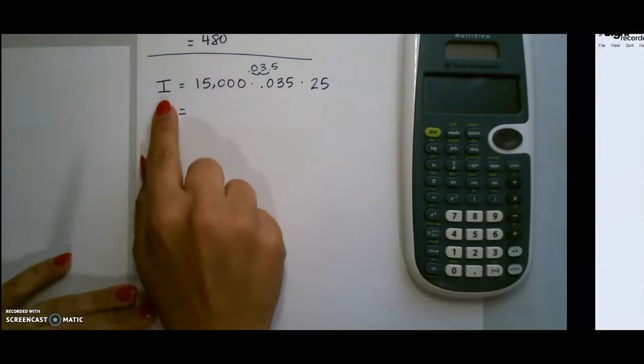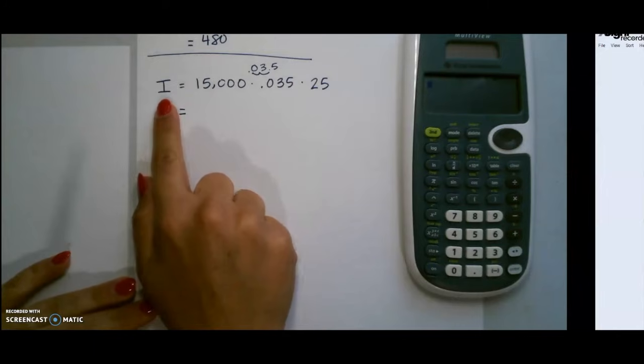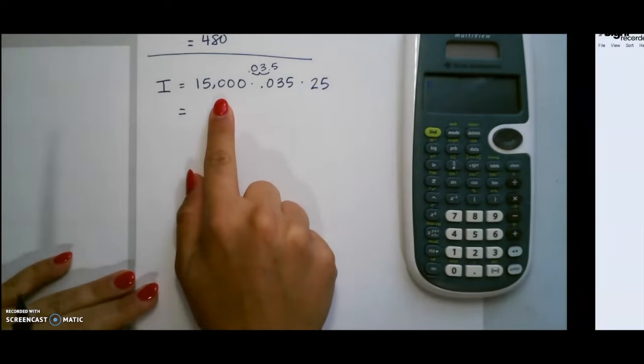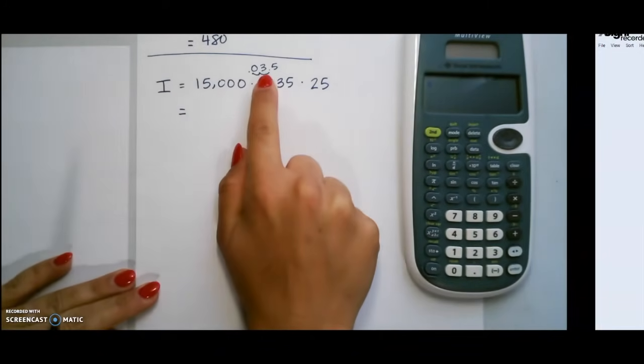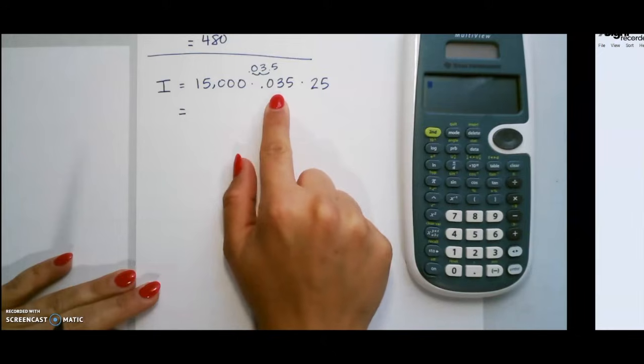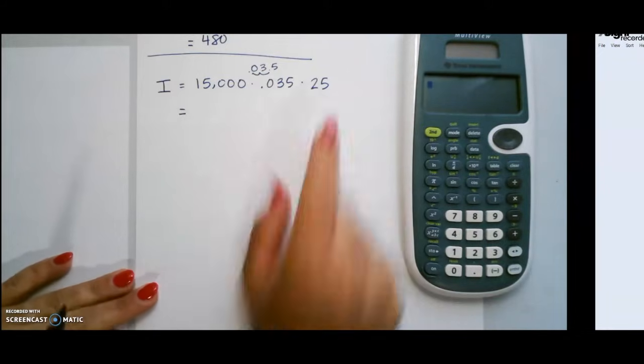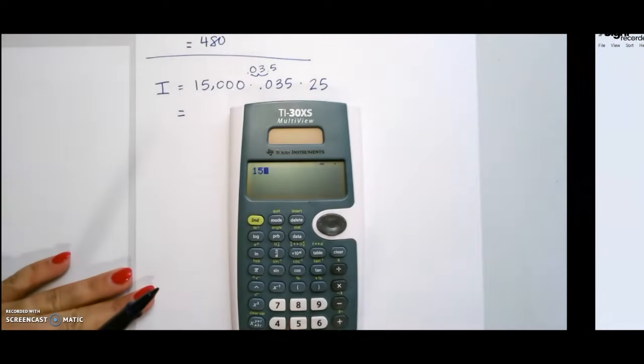First, we're going to find the interest just like we have on the two previous problems. $15,000 is our principal amount. 3.5% was our percent, so we changed it to a decimal. And our time was 25 years. So we plug that into our calculator.